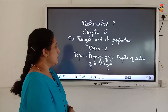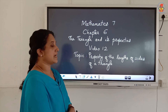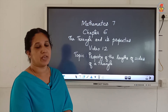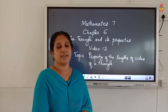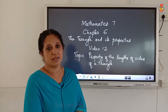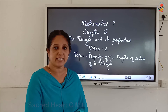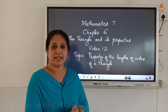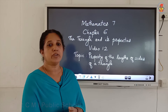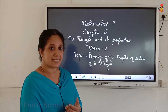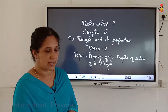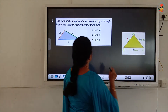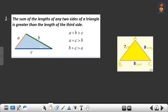Now the next topic is the property of the length of sides of a triangle. We have already learned about properties regarding the angles — the exterior angle property and the angle sum property of the triangle. Now we want to look at the side lengths. The first property: the sum of the lengths of any two sides of a triangle is greater than the length of the third side.